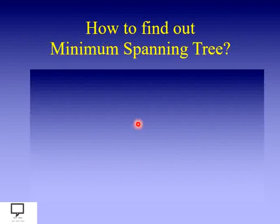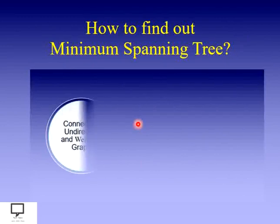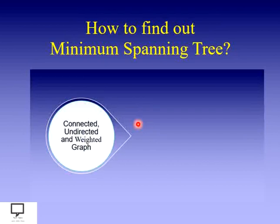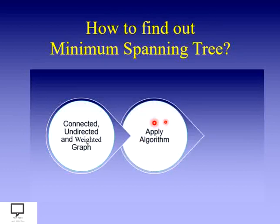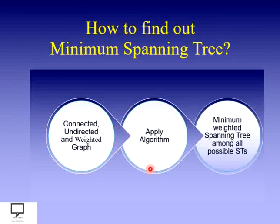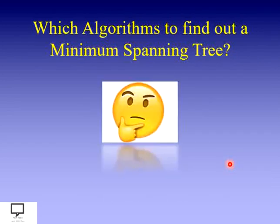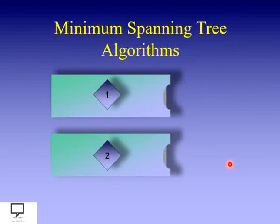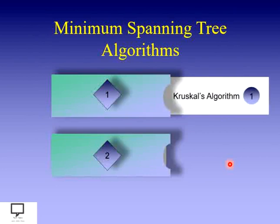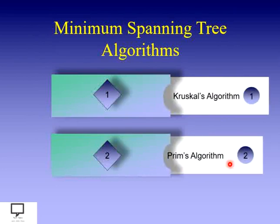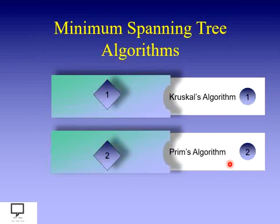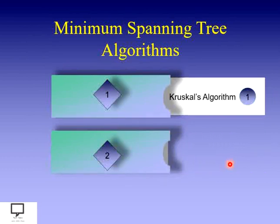So how do we find out a minimum spanning tree? We take a connected, undirected, and weighted graph, then apply an algorithm to find the minimum weighted spanning tree. There are basically two algorithms: the first one is Kruskal's algorithm and the second one is Prim's algorithm. In this current video session, we are focusing on Kruskal's algorithm.